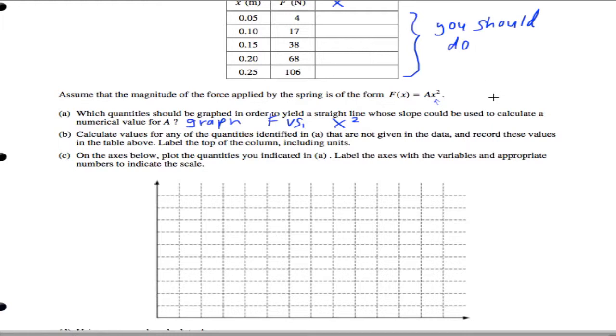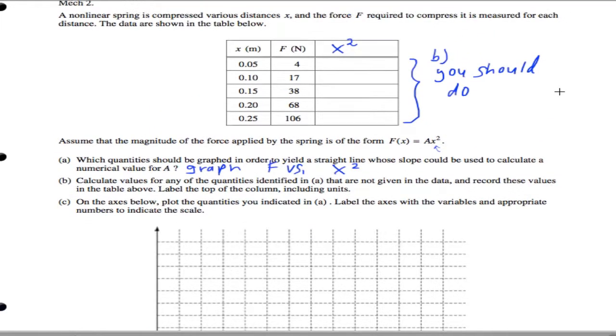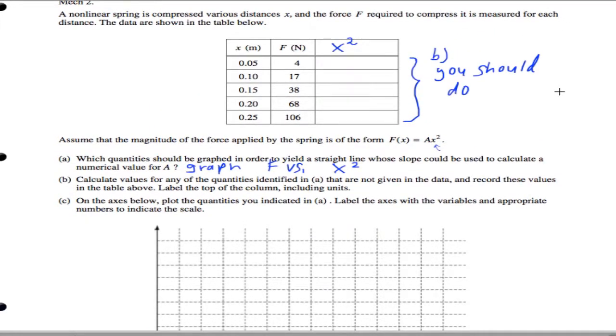Okay. And it says calculate values for any of the quantities identified in A that are not given in the data, and record these new values above. So that is what part B is. So you should go ahead and do that now. And I'll catch up with you in the next video. Thank you.